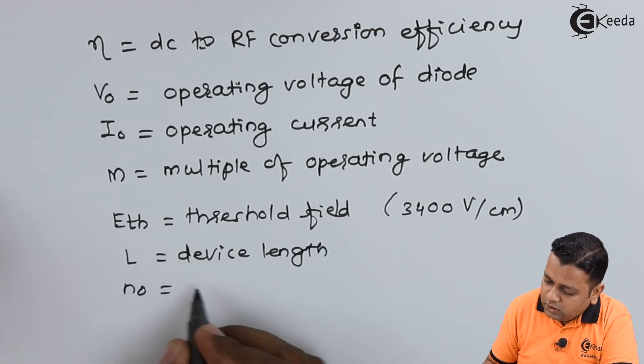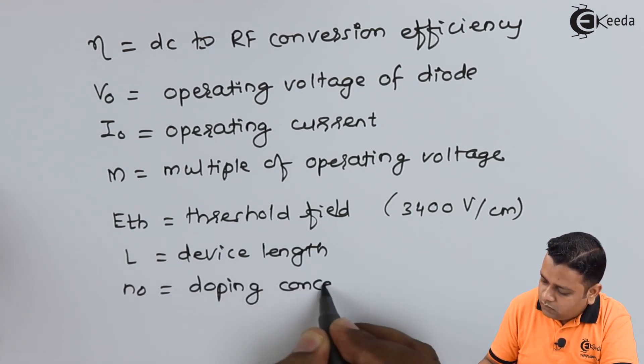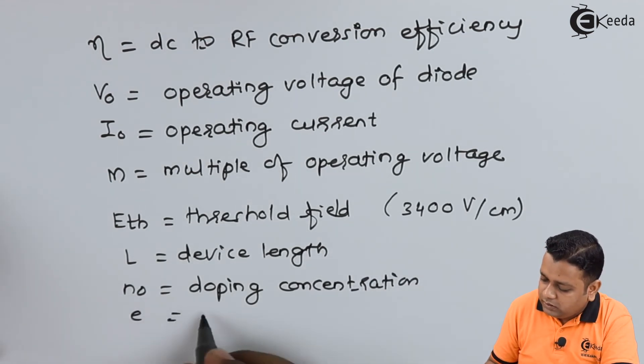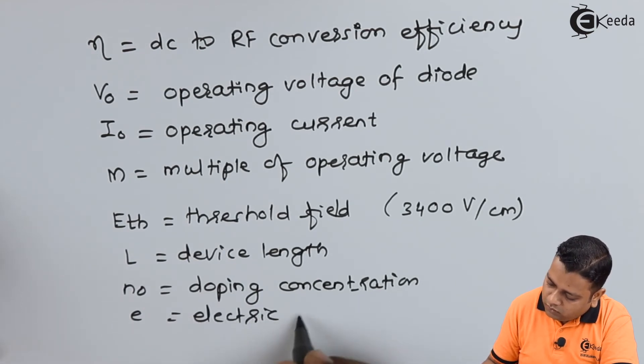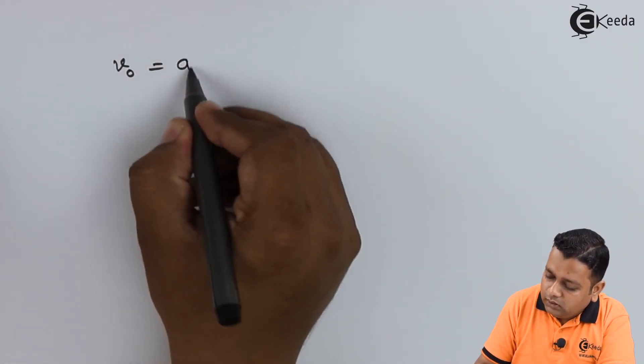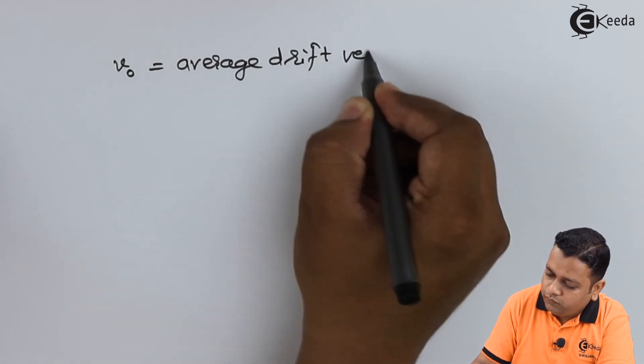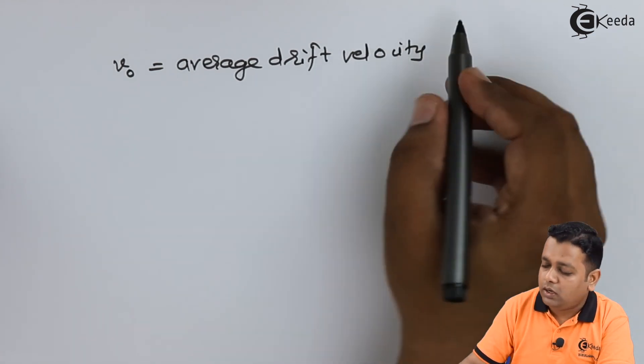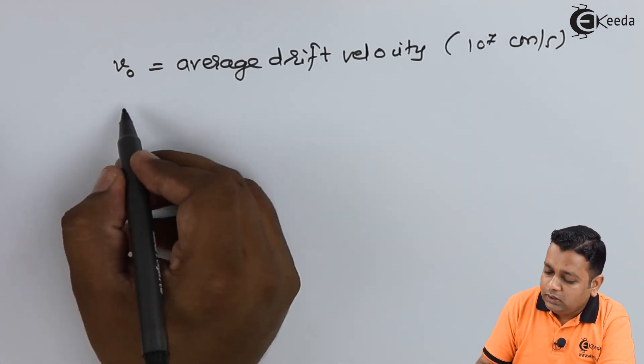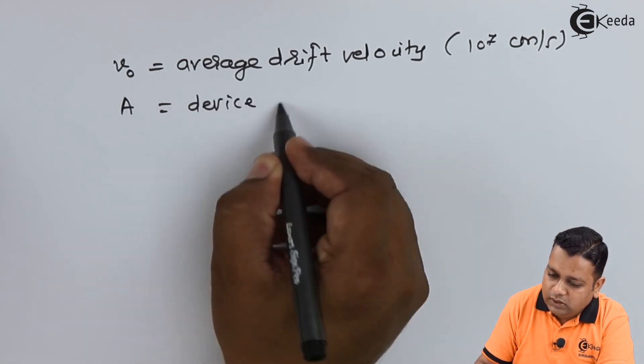We have N0 representing the doping concentration. E is the electric charge. V0 is called the average drift velocity. This is for the electron and it is about 10 to the power 7 centimeter per second.